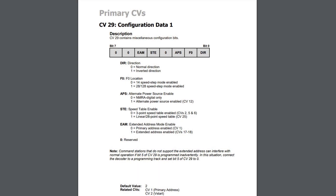The next one is custom speed tables. Bit number 4, worth a value of 16, enables alternate speed tables. Now in the Tsunami 2 and in the Econami, CVs 2, 5, and 6 are on by default, so you can quickly create a quick three-point speed table. But if you want to go in and create a more customized speed table and give yourself individual control over all 28 steps throughout the speed range, you would then want to enable this bit worth the value of 16.